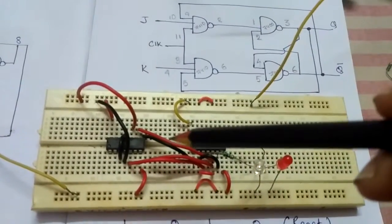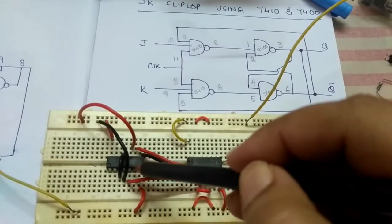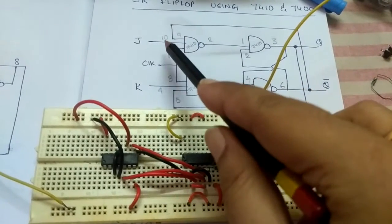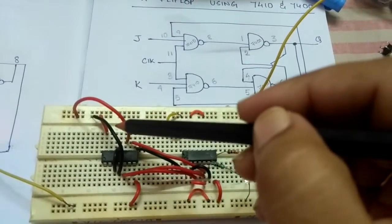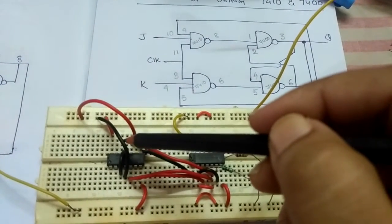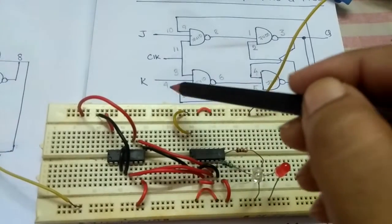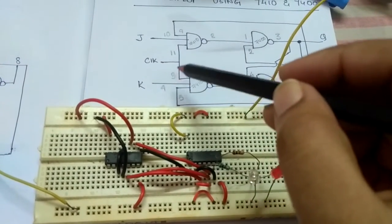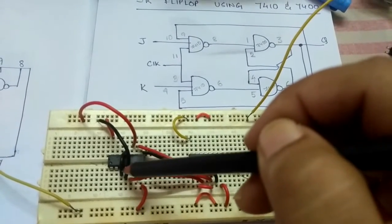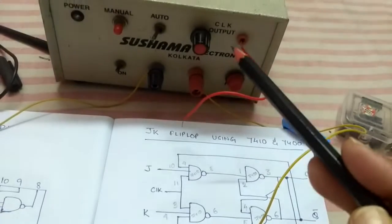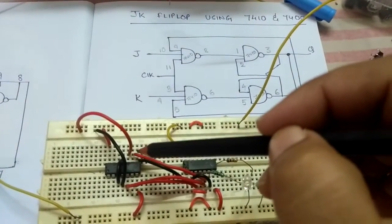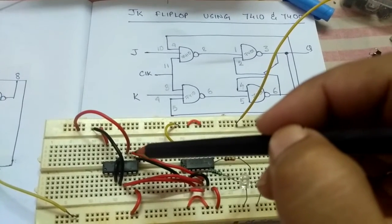In this IC, the 7410 IC, I have taken J from pin number 10. This is my J and this is my K, that is from pin number 4. Pin numbers 3 and 11 I have joined together from where I'll be connecting this clock input.